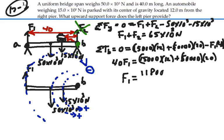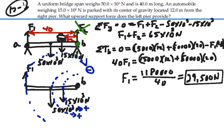Divide by 40. That gives me 29,500 newtons. So the force on the left-hand side of the pier is equal to 29,500 newtons.